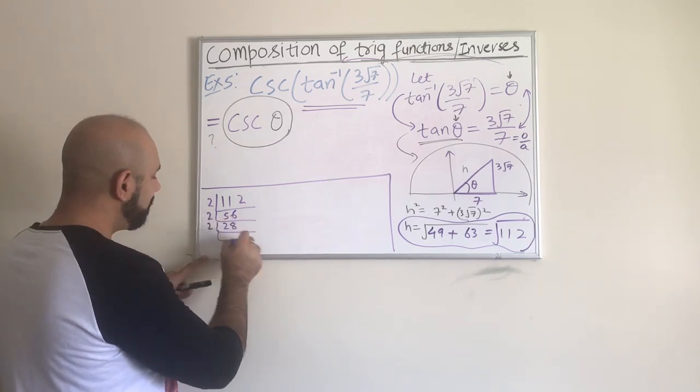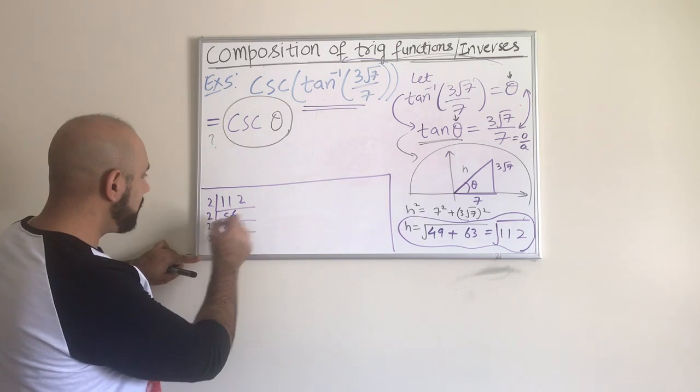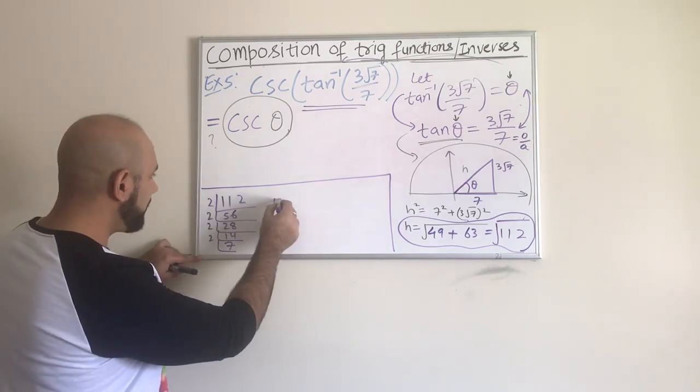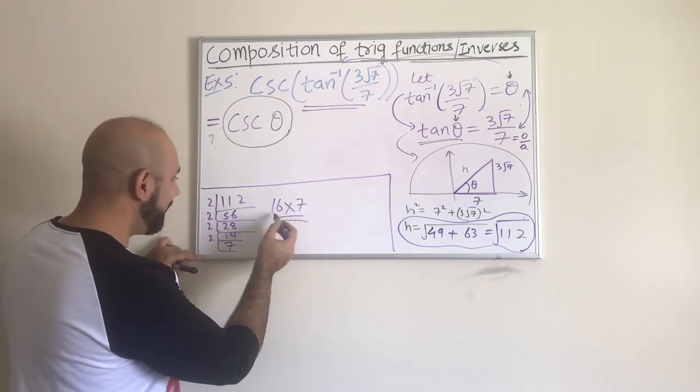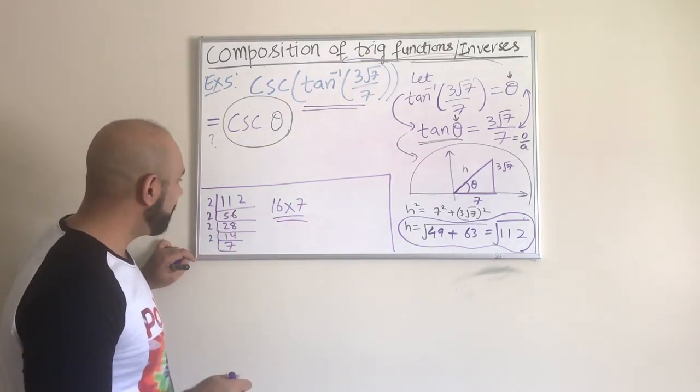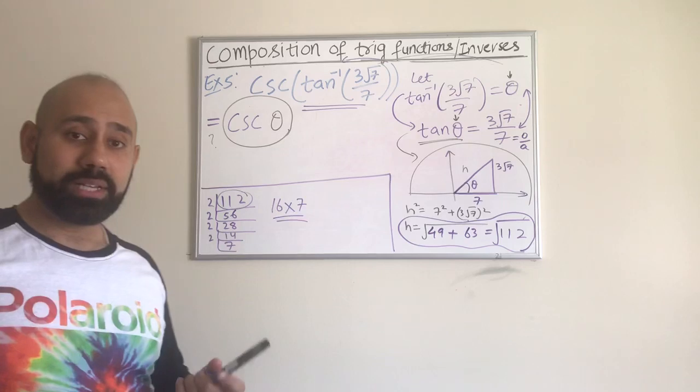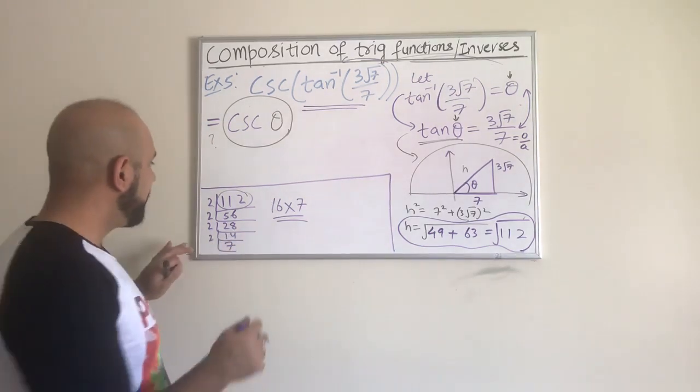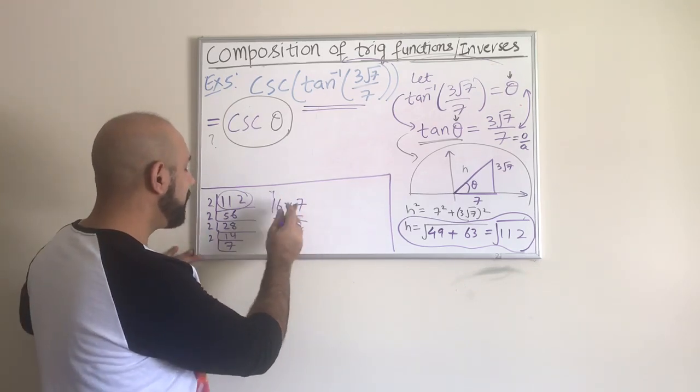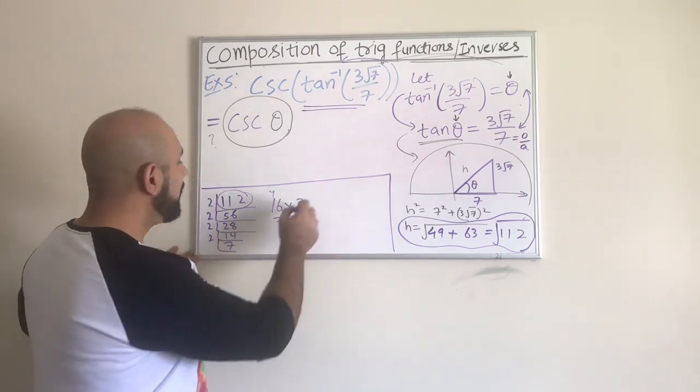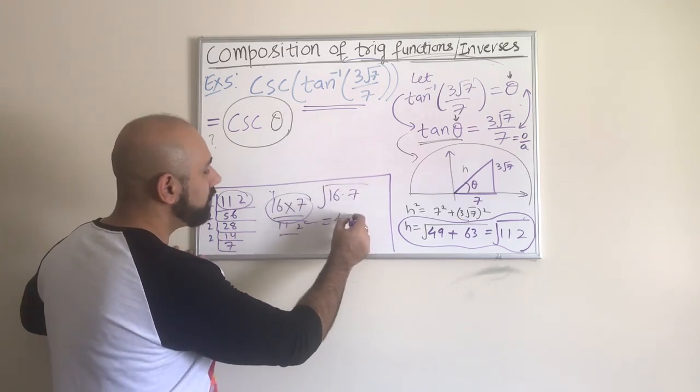We cannot just leave √112 as it is because it can be simplified. Let's do it on the side: √112. I usually start with the smallest factor—2 times 56, then 2 times 28, 2 times 14, 2 times 7. Then I have 2 times 2 times 2 times 2, which is 16 times 7. So square root of 16 times 7, square root of 16 is 4, square root of 7 I cannot simplify.